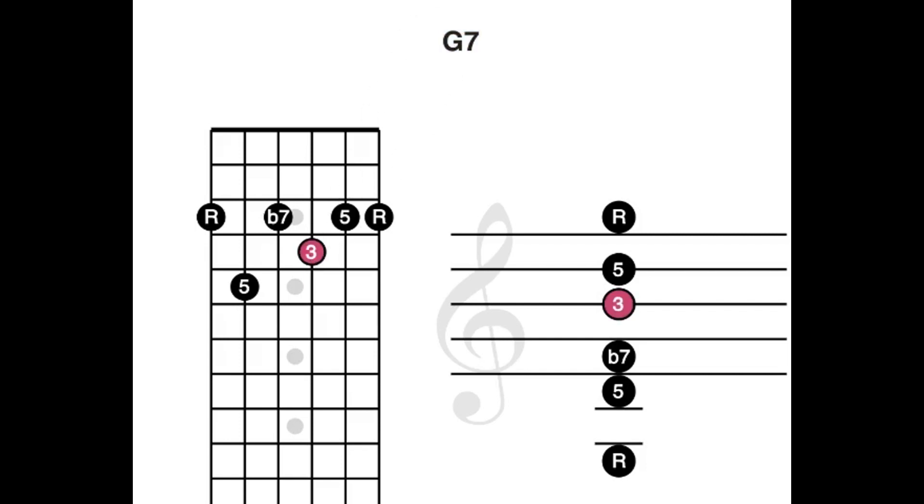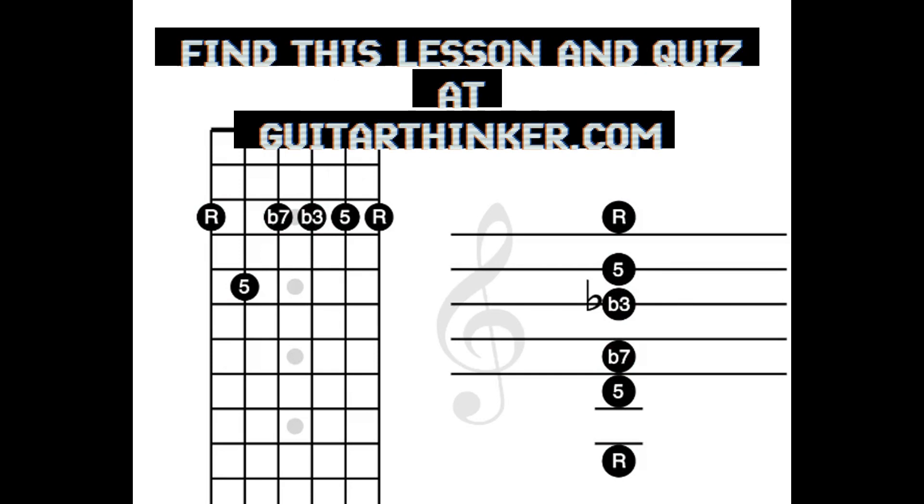Let's lower this 3rd down by one half step. That makes a minor 3rd, and a minor 3rd, and a minor 7th. That gives us a minor 7th chord. I hope this little bit of music theory has been helpful for you, and it helps you connect a few dots.